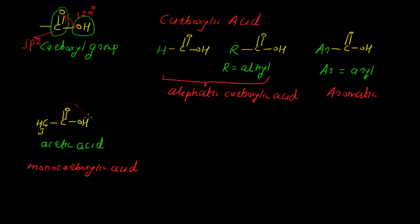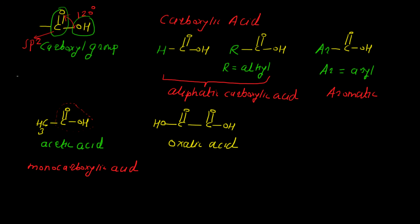We can also write the structure for dicarboxylic acid. The general name of this compound is oxalic acid. Its structure is: OH — C double bond O — C double bond O — OH. Here you can see that two carboxyl groups are present, and such types are known as dicarboxylic acid.